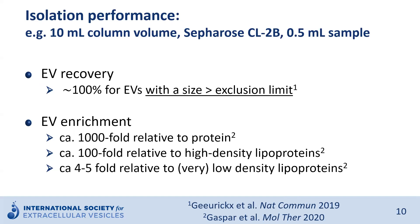In general we can state that the recovery of EVs larger than the exclusion limit of the beads is close to 100%. This was determined by measuring the concentration of fluorescently tagged EVs before and after separation. Do keep in mind that when using a resin such as Sepharose CL2B, which has an average pore size of about 75 nanometers, smaller EVs will be isolated only with very low efficiency. In terms of EV enrichment, SEC is usually capable of reducing free protein contamination to about 0.1% compared to EVs. Also high density lipoproteins, which have a size of less than 20 nanometers, are efficiently removed. The low density and very low density lipoproteins with a similar size range as EVs will only be removed by a factor of 4 to 5.